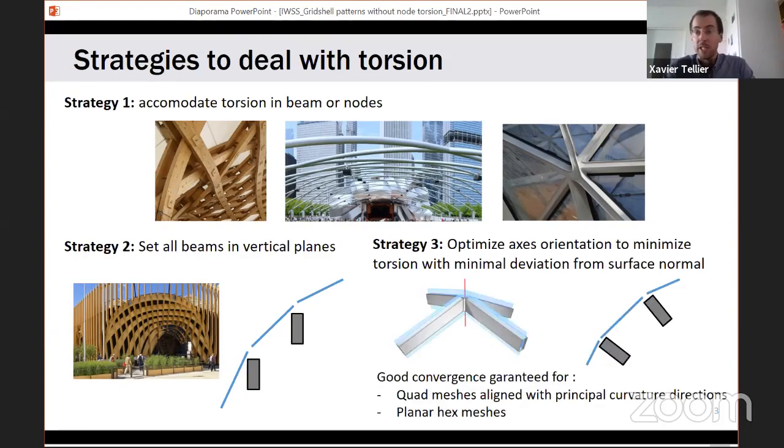The third strategy is to try to get the best out of the two first ones by using optimization, optimizing the orientation of your axis to obtain torsion-free nodes while aligning your beams with the surface normals. You can get it to converge quite well if you're using quadrangular meshes that are aligned with principal curvature directions or planar hexagonal meshes. But what about other patterns? That's the topic of our work.